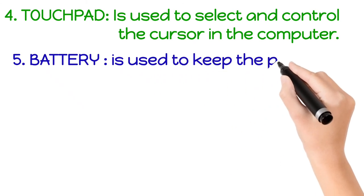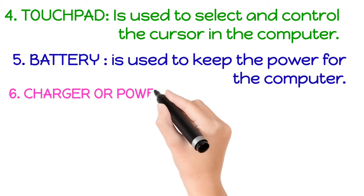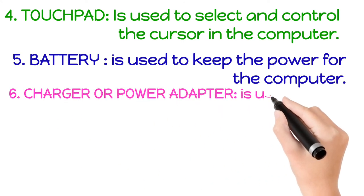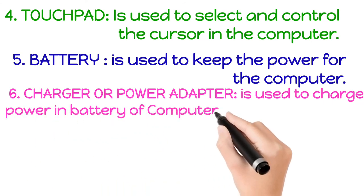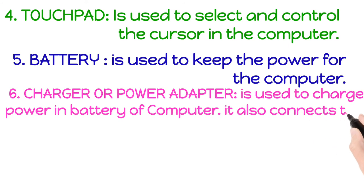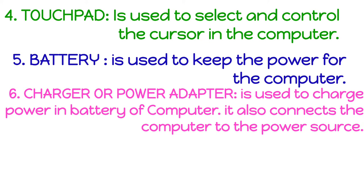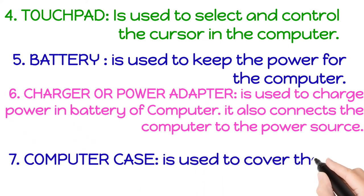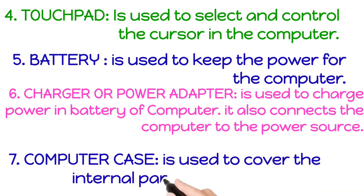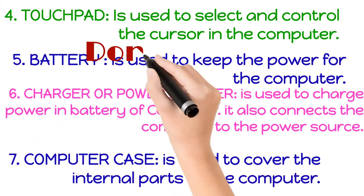The battery is used to keep the power for the computer, meaning you can use it when not connected to electricity. The charger, or power adapter, is used to charge the power in the computer battery and connects the computer to the power source. The computer case is the outer part that covers and protects the internal parts of the computer.